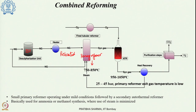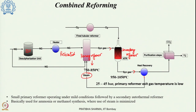The syngas which is partially reformed is passed through the autothermal reformer — the secondary reformer — and undergoes various processes that we have already learned. The outlet gas from the secondary reformer is then cooled; excess heat in the syngas can be utilized for steam generation. Thereafter the syngas can undergo various gas cleaning steps and water gas shift reaction to finally get the desired product.